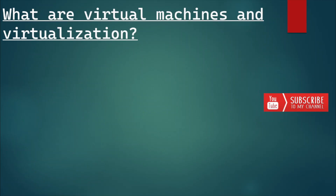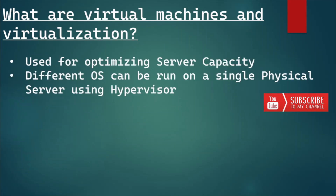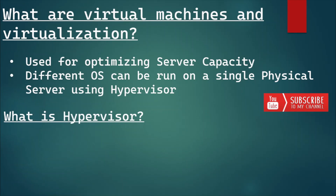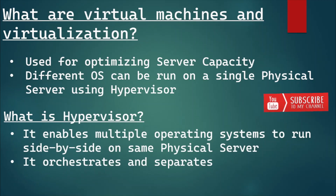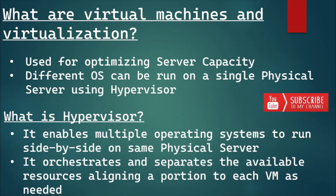Before containers came along, virtual machines were the technology of choice for optimizing server capacity. Programmed to emulate the hardware of a physical computer, it makes it possible to run what appears to be multiple computers with multiple different operating systems on a single hardware server. Virtualization is not possible without a hypervisor. A hypervisor, or virtual machine monitor, is a software or firmware layer that enables multiple operating systems to run side by side, all with access to the same physical server resources. The hypervisor orchestrates the available resources like memory and storage, and aligns a portion to each virtual machine as and when it is needed.